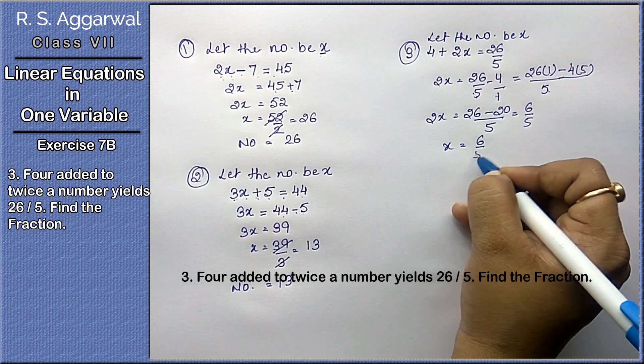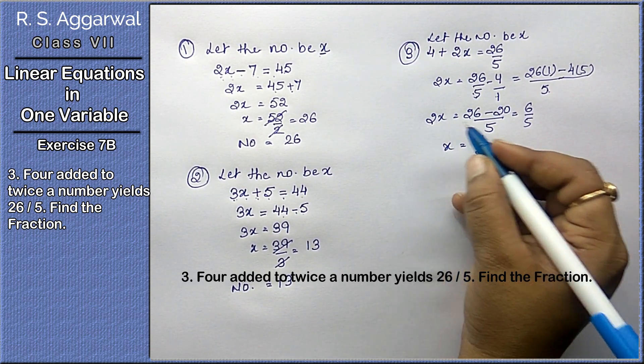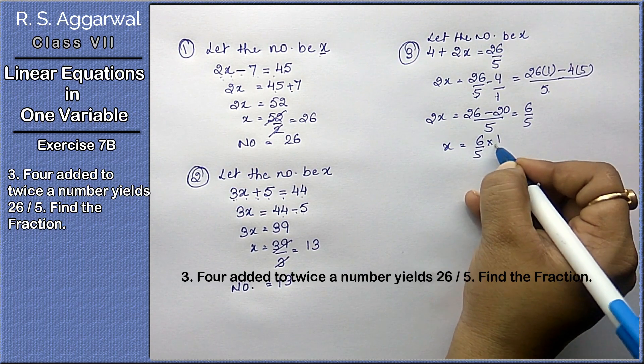x value will be 6 upon 5. This was in multiplication with x, so it comes to division as 1 upon 2.